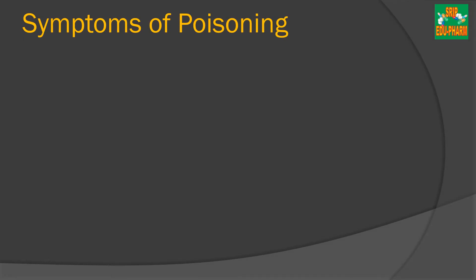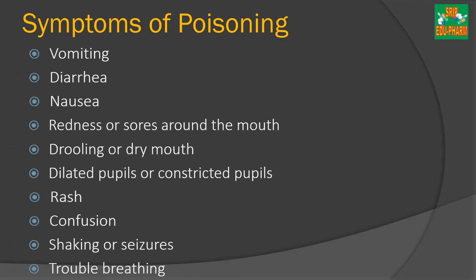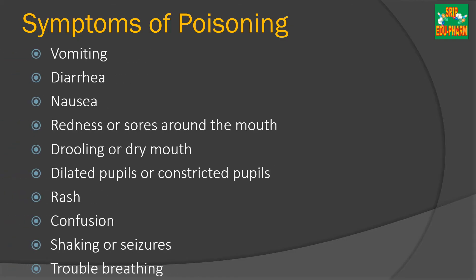Here are some common symptoms of poisoning: vomiting, diarrhea, nausea, redness or soreness around the mouth, drooling or dry mouth, dilated or constricted pupils, rashes, confusion, shaking or seizures, and trouble breathing.